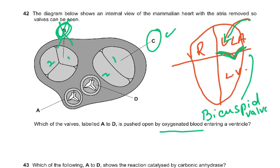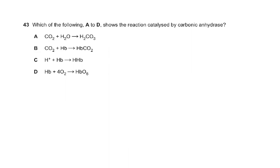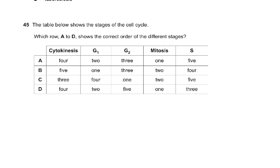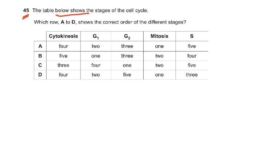Question number 43: which of A to D shows the reaction catalyzed by carbonic anhydrase? Carbonic anhydrase combines carbon dioxide and water to form H2CO3 — carbonic acid. The answer is A. Carbonic anhydrase is part of the new syllabus — you should know it very well. The diagram for question 44 shows a pathogen with reverse transcriptase, capsid, RNA, glycoprotein, lipid envelope, and protease. Which of the options A to D is the disease caused by this pathogen? It's a virus, so it has to be HIV or AIDS.